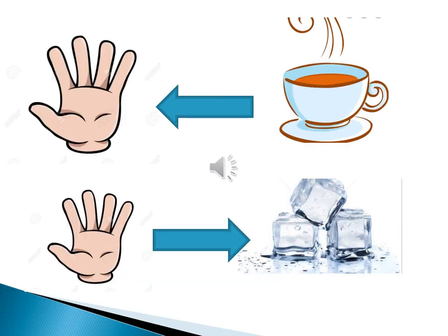When you touch a cup of tea, you feel hot. Why? Due to the transferring of heat, of course, from the cup of tea to your hand. But when you touch a cube of ice, you feel cold. It means the heat transfers from your hand to the cube of ice.